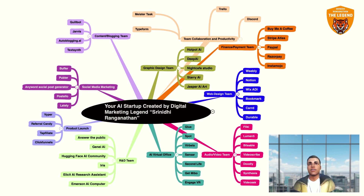The last one is the finance and payment team, where you get all the profits and handle all the finance stuff. Buy Me a Coffee, Stripe, PayPal, Razorpay, and Instamojo — Instamojo can also create a shop and serve as a payment gateway. So this is all the stuff that would constitute your AI startup: a virtual office, product launch staff, RNG team, audio video team, web design team, social media marketing team, graphic design team, content blogging team, team collaboration and productivity tools, and a finance or payment team.